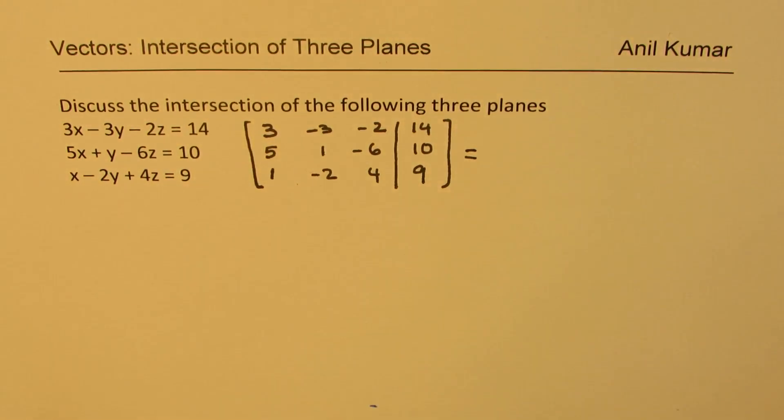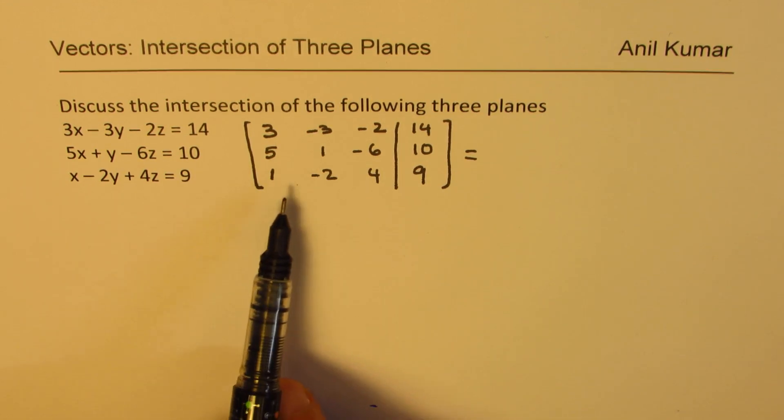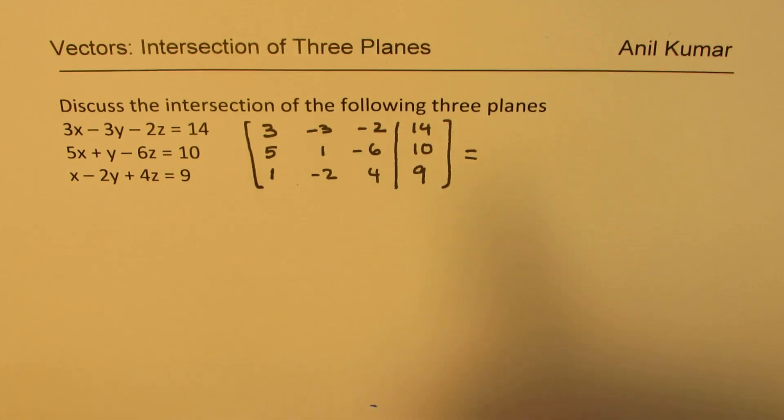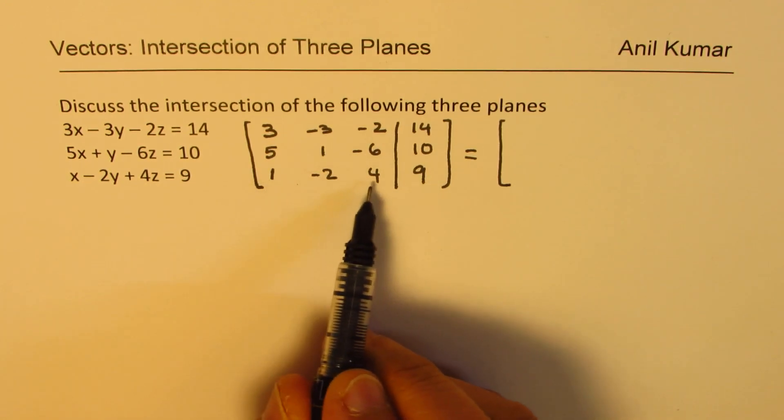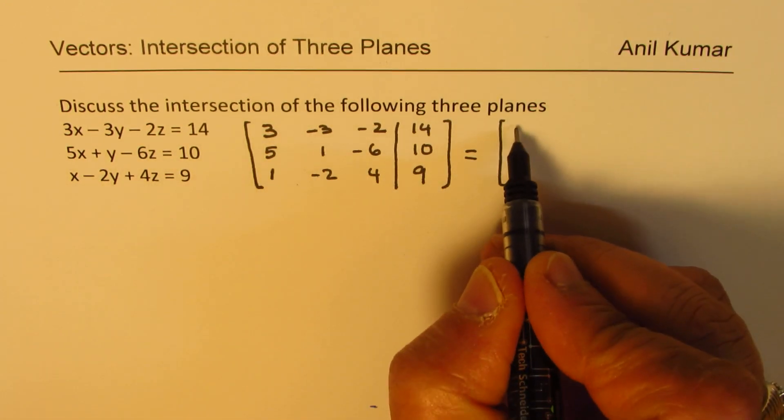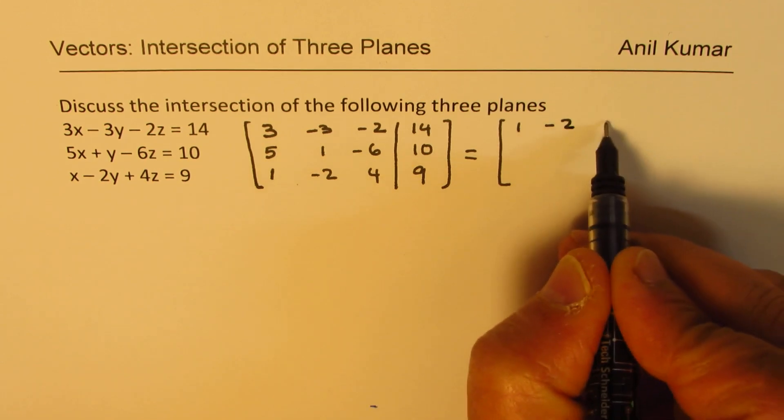We will actually do elementary row operations to find the solution. Normally we should be rearranging the rows so that we write the simplest form right on the top. I am going to change and write this particular row on the top. So we will have 1, minus 2, 4, 9 on the top.